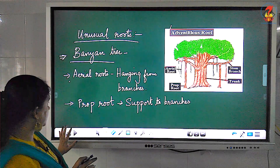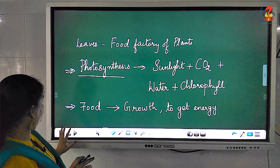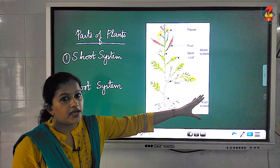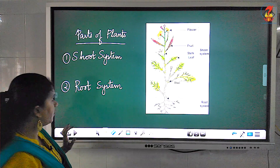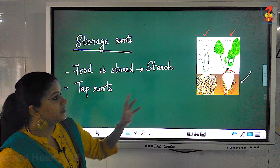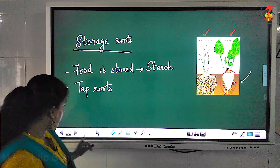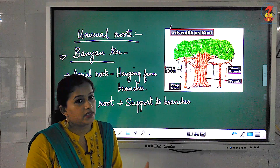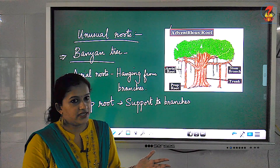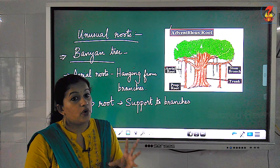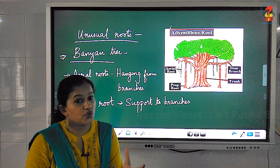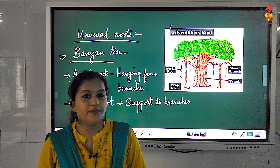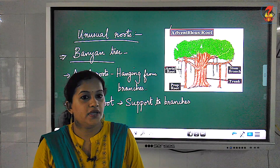I hope you have understood these portions. In this video, we mainly discussed the different parts of the plant — the root system and the shoot system. We learned there are two types of roots: tap root and fibrous root. Some tap roots are storage roots like carrot, radish, and turnip. Some roots are unusual, like the aerial and prop roots of the banyan tree. We also learned about the desert oak, which stores water in its trunk. Please read the text thoroughly and underline the important points. Thank you, children.